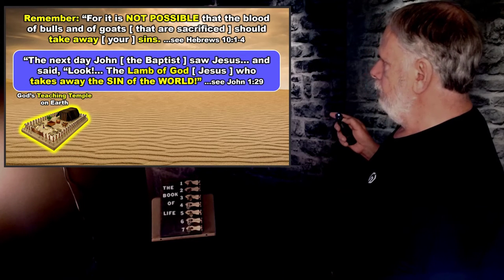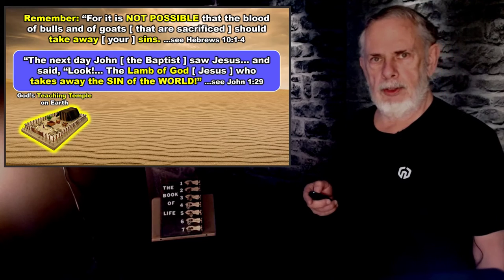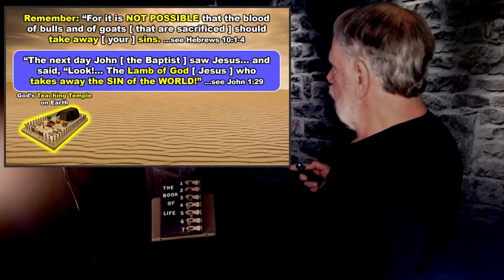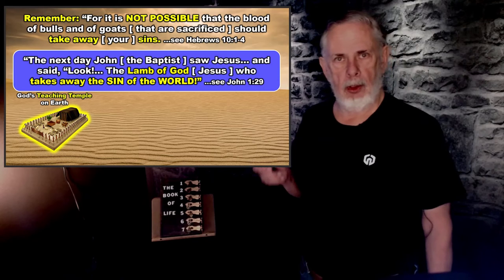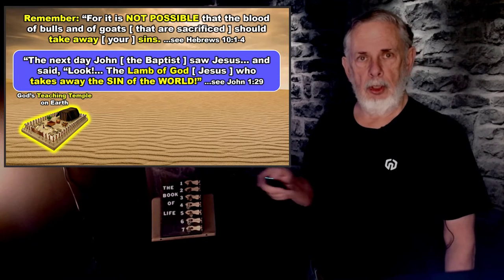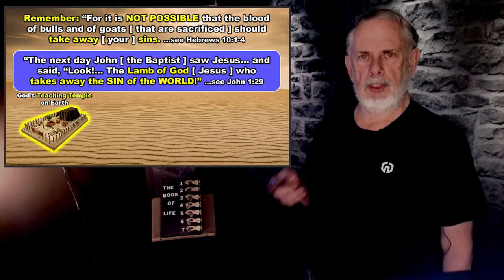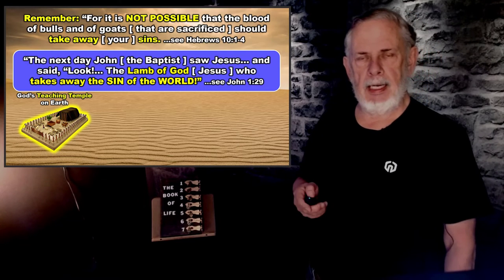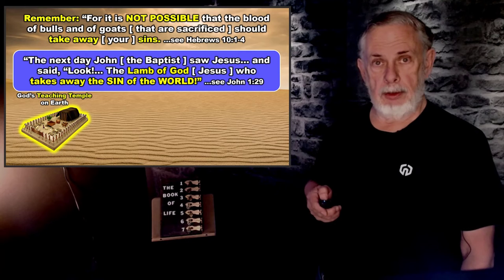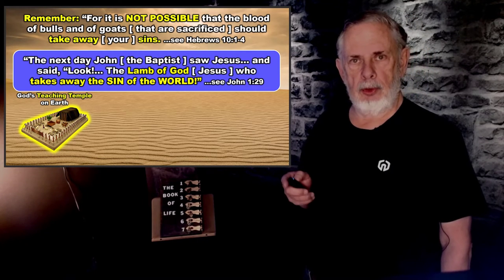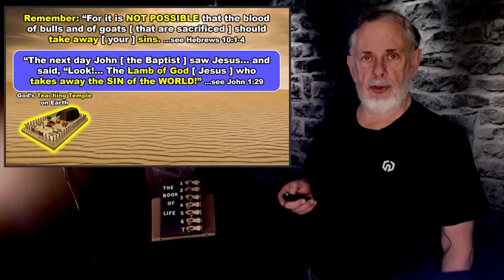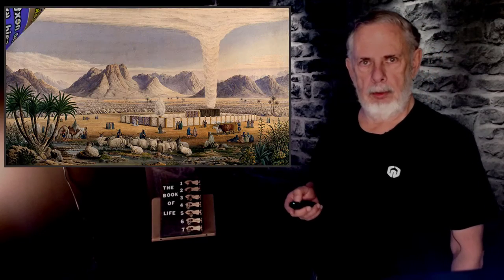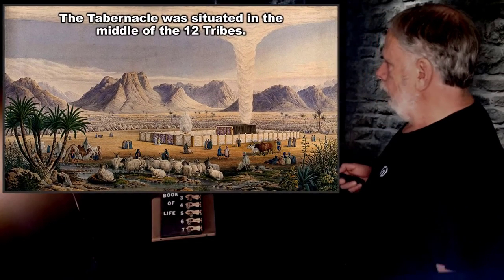Where in the Bible does it say that Jesus is the lamb that takes away our sin? In John 1:28 it says: 'The next day John the Baptist saw Jesus and said, Look — the Lamb of God, who takes away the sin of the world.' So it's well established: the animals in the Old Testament did not really take away people's sins — they were just an example of what Jesus was going to do. People's faith in that service was counted righteous, and they were saved by that ritual.